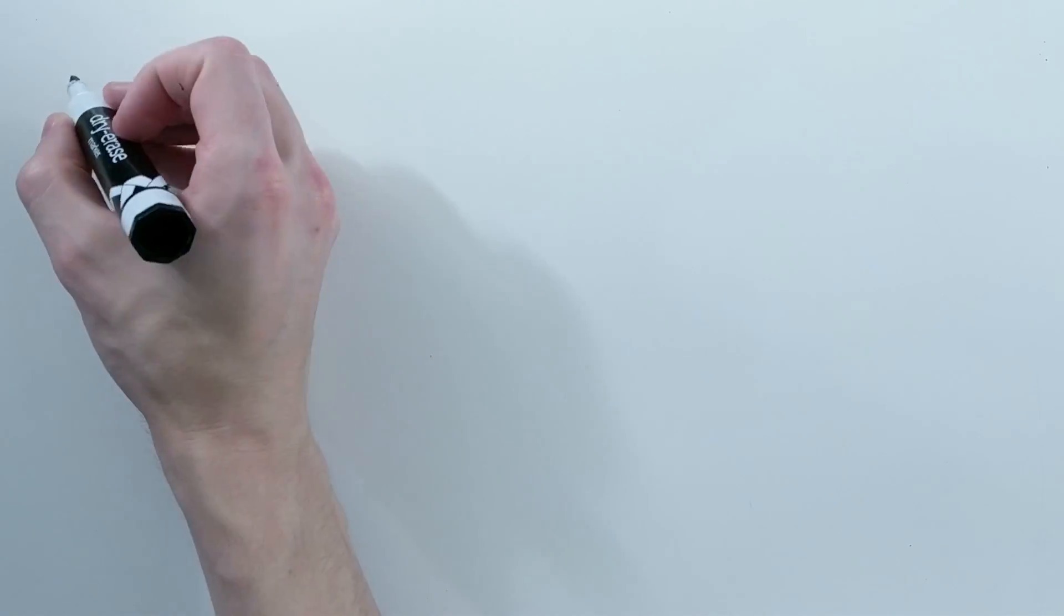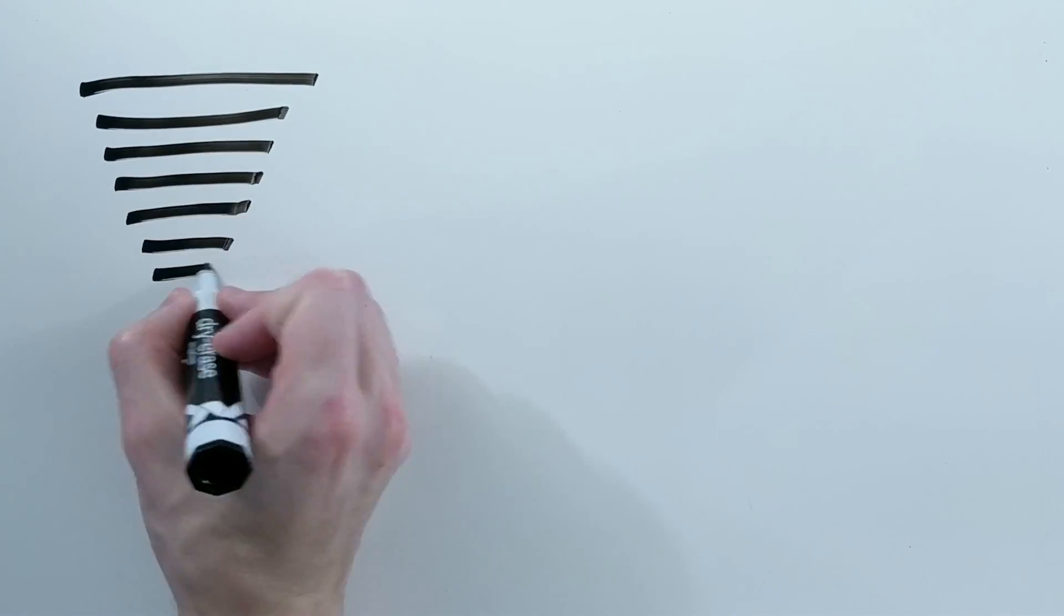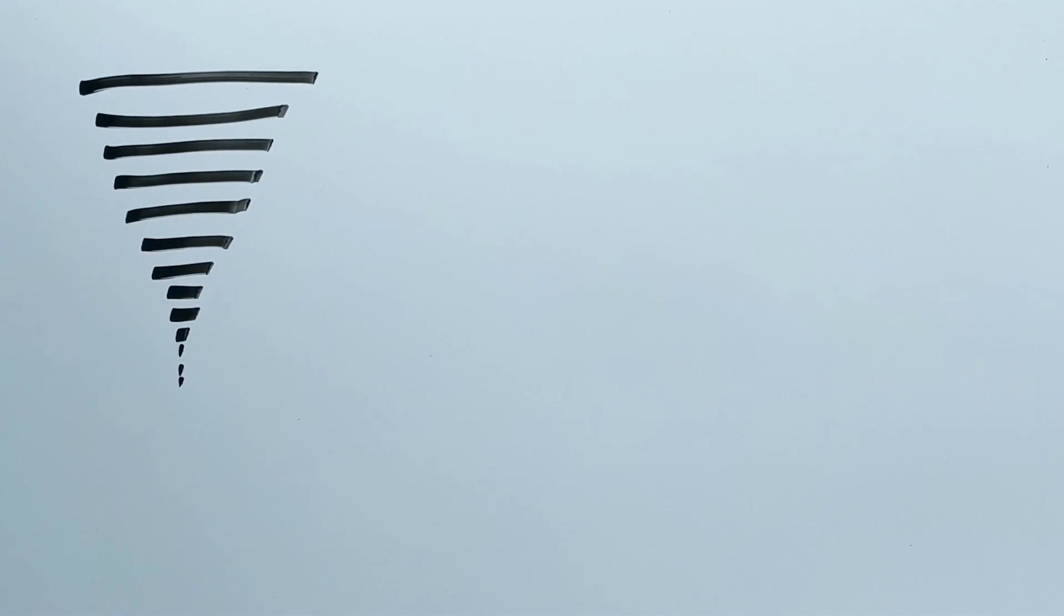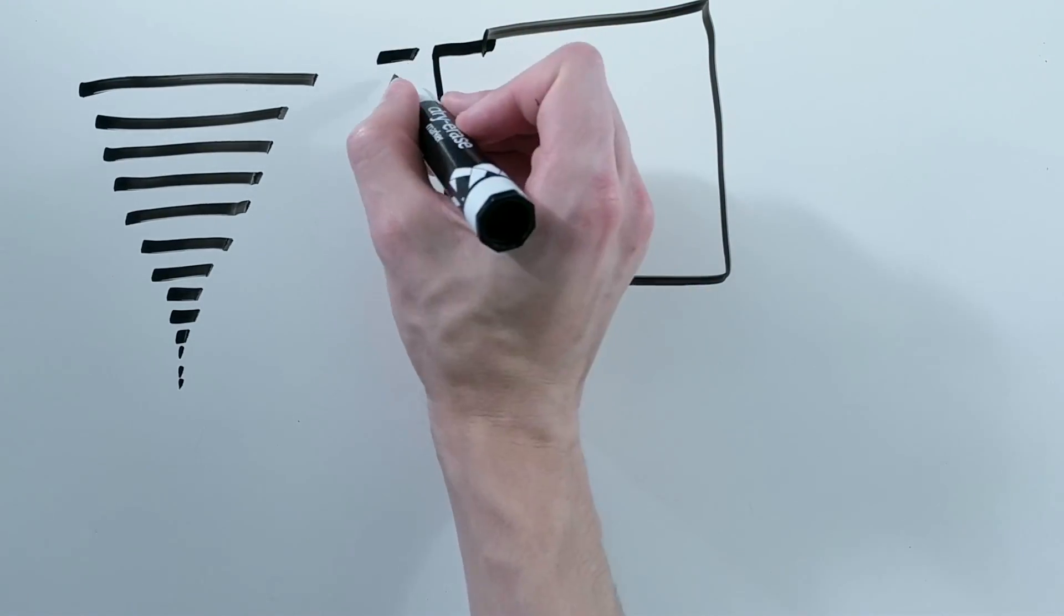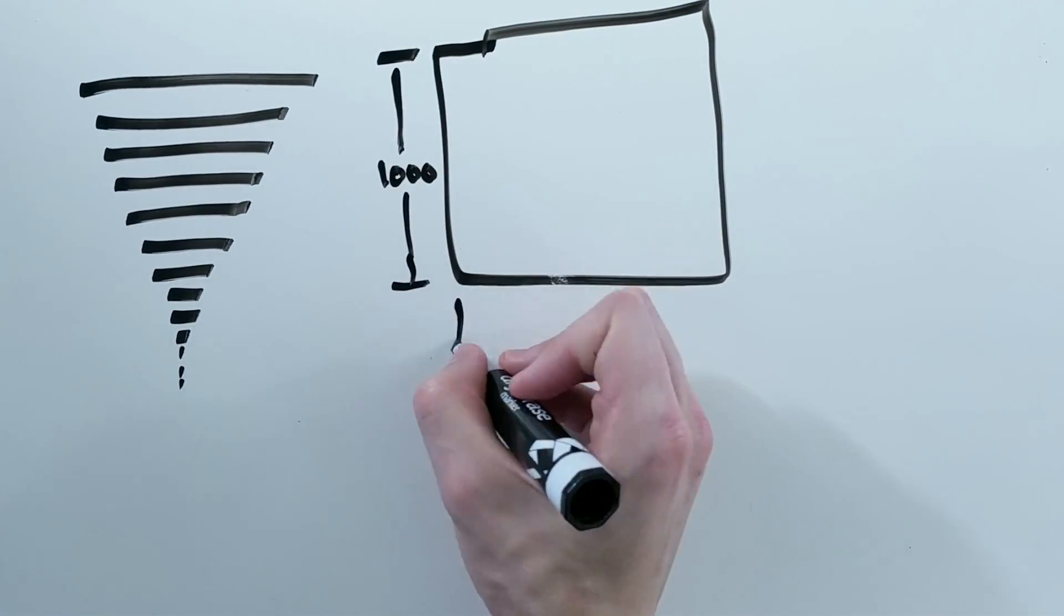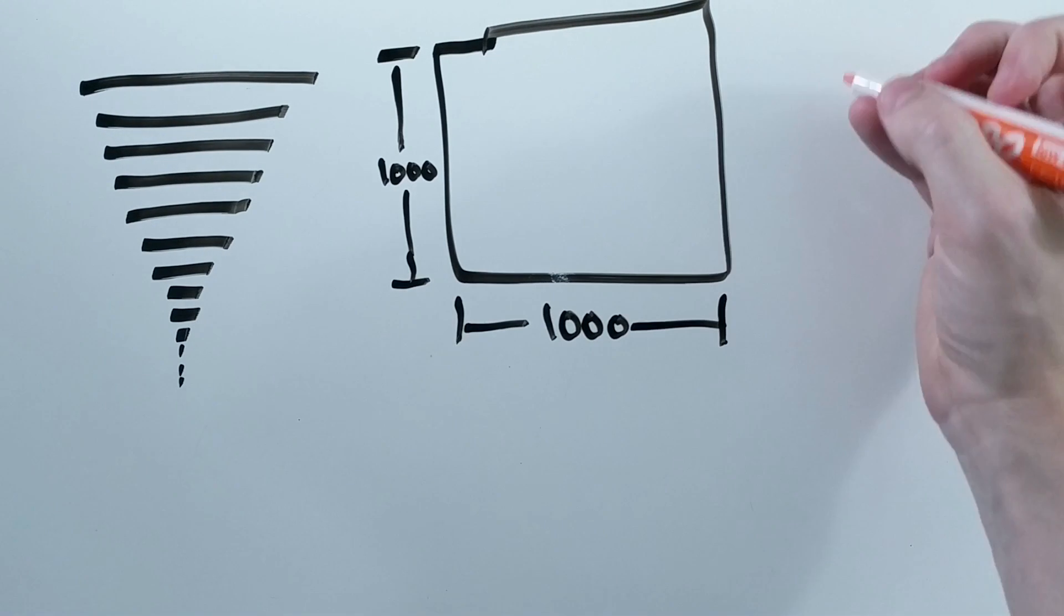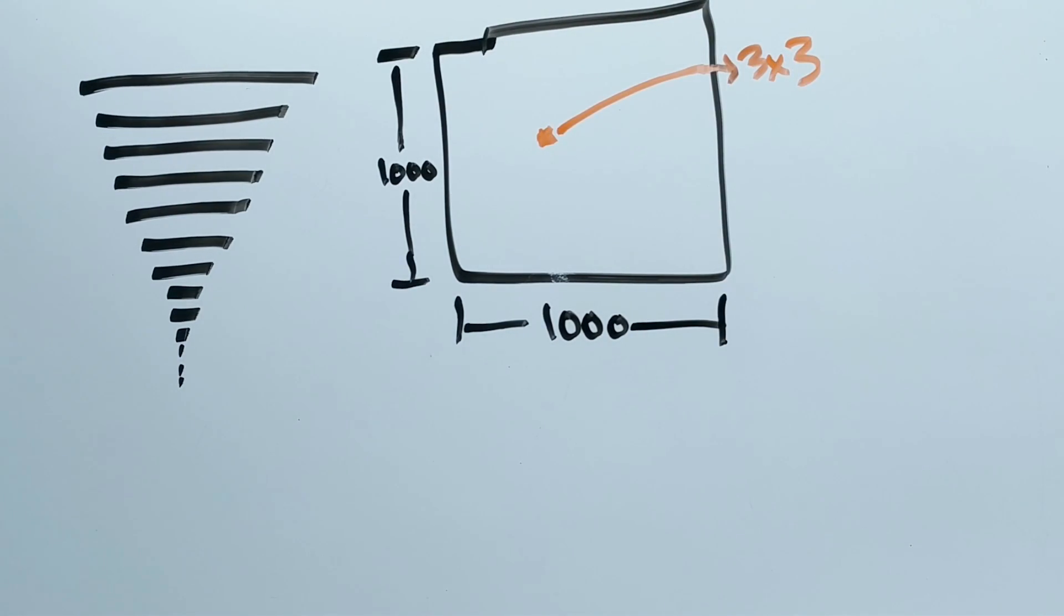One key place where you need to understand the receptive field is in calculating the number of layers necessary to understand all of your input. For example, with a 1000x1000 image and a 3x3 filter, how many layers do you need so that the last layer is looking at all of the image?